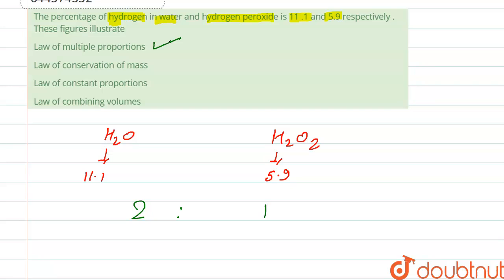Our first option is law of multiple proportions. Law of conservation of mass: mass is not given for both compounds, so we cannot say that it follows the law of conservation of mass.